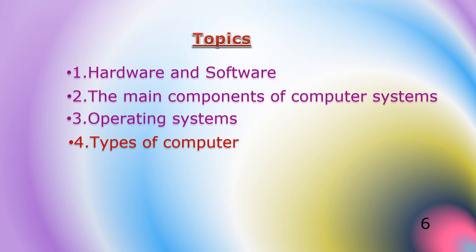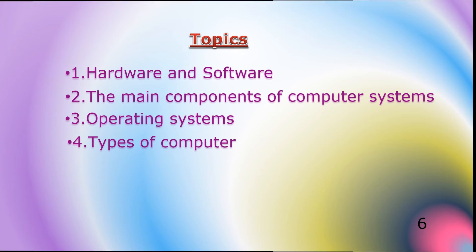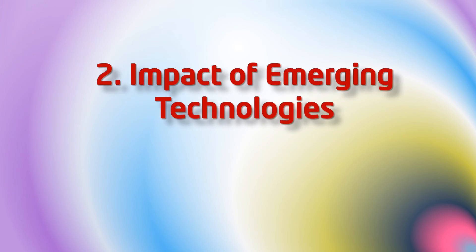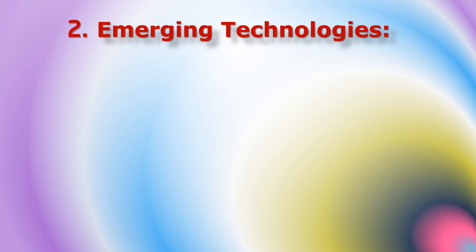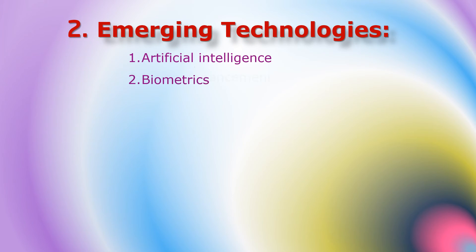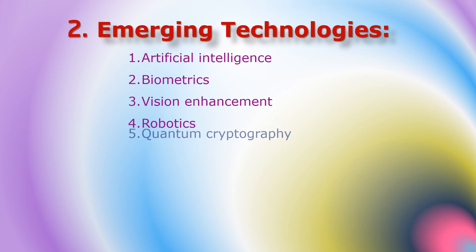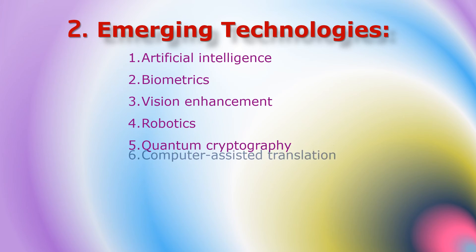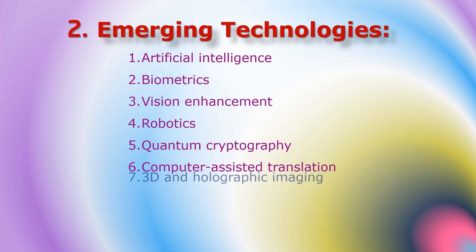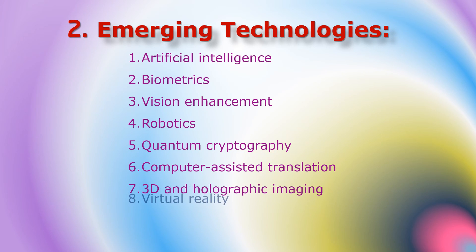In section two, we'll cover the impact of emerging technologies. We'll identify each of these technologies and discuss its impacts on everyday life. Emerging technologies such as artificial intelligence, biometrics, vision enhancement, robotics, quantum cryptography, computer-assisted translation, 3D and holographic imaging, and virtual reality.